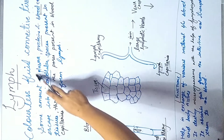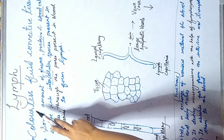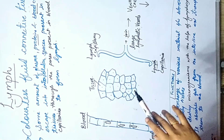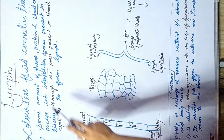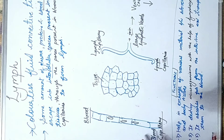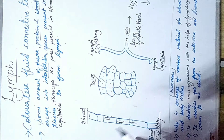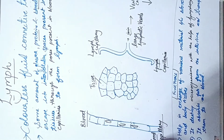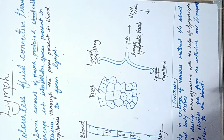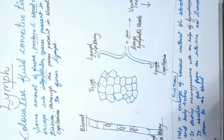Lymph is a colorless fluid connective tissue. Like blood, it is a fluid connective tissue, but its composition is almost equal to plasma. Unlike plasma, which is yellowish in color, lymph is colorless. It does not contain any RBCs or platelets, but some WBCs are present as lymphocytes. Compared to plasma, lymph contains less protein.